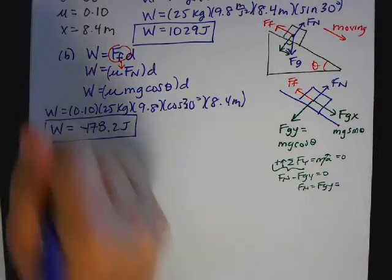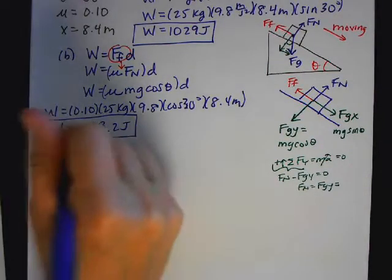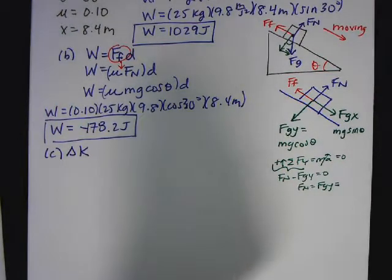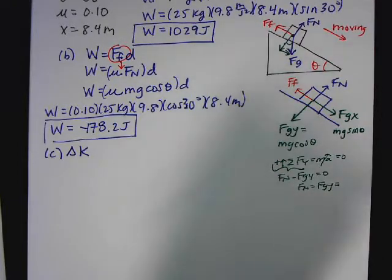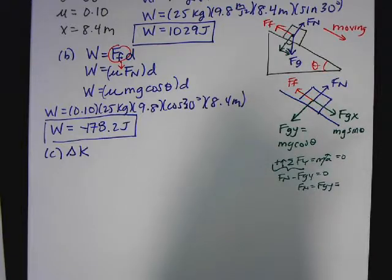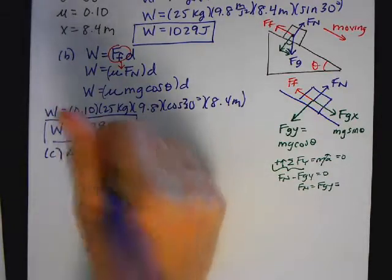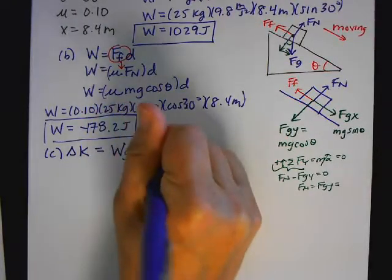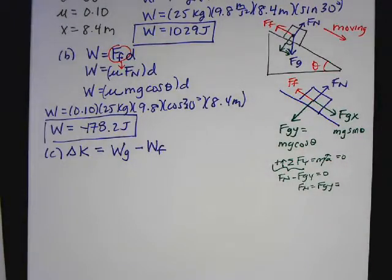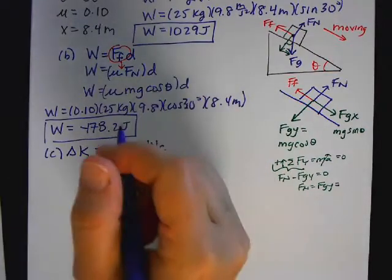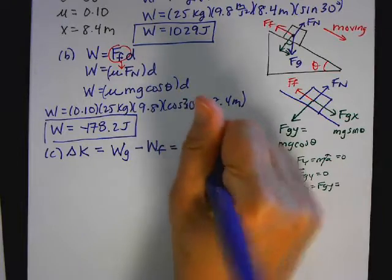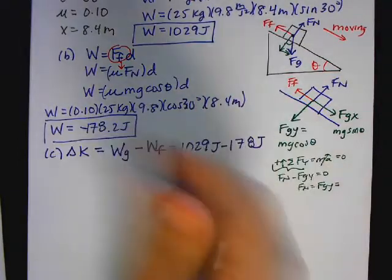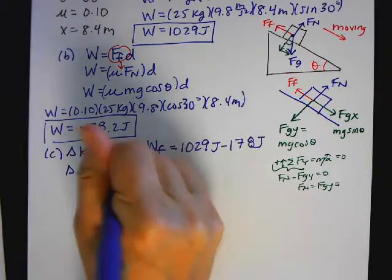Part C says determine the change in kinetic energy. When an object loses height, it gains speed — that's conservation of energy. The work of gravity is the energy change due to the change in height; it's the amount of potential energy that disappears. So delta K equals the work done by gravity minus the work done by friction. That's 1029 minus the friction answer, giving a change in kinetic energy of 851 joules.